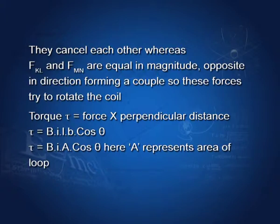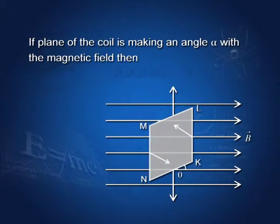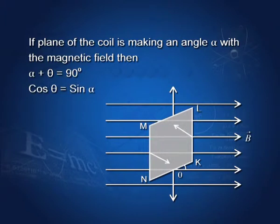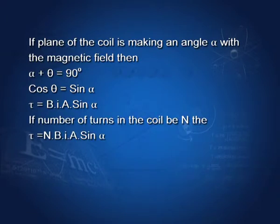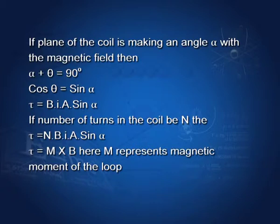Here, A represents the area of the loop. If the plane of the coil makes an angle alpha with the magnetic field, then alpha plus theta equals 90 degrees, so cos theta equals cos(90 − alpha) which equals sin alpha. Substituting, we get τ equals BIA sin alpha. If the number of turns in the coil is N, then the total torque τ equals NBIA sin alpha. In vector form, τ equals M cross B, where M represents the magnetic moment of the loop. The SI unit of magnetic moment is ampere metre squared.